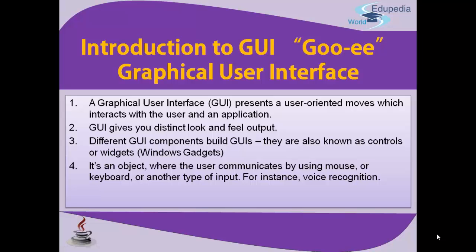A graphical user interface presents user-oriented controls which interact between the user and an application. You place controls like text boxes and labels on the canvas, and then the canvas is ready to use on screen. GUI gives you a distinct look and feel output — it has a Nimbus platform that highlights its beauty, and developing applications in GUI is very interesting.